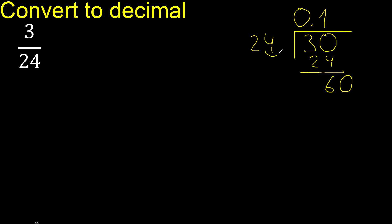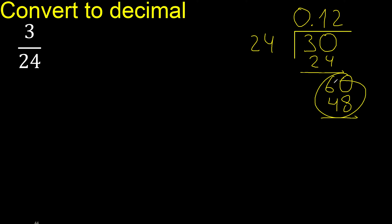24 multiplied by what number? Multiplied by 3 is excessive. Multiplied by 2 is 48. Subtract: 60 minus 48 is 12. Complete with 0, giving us 120.